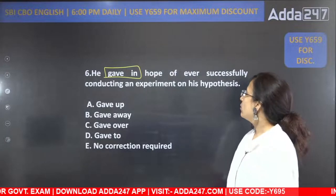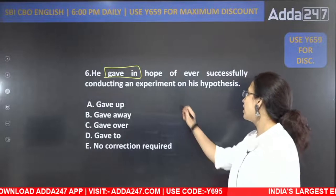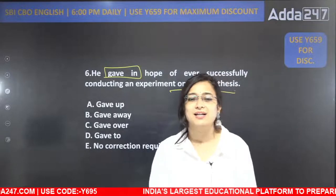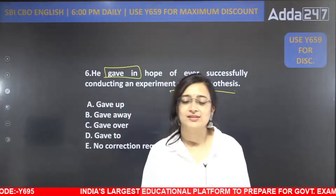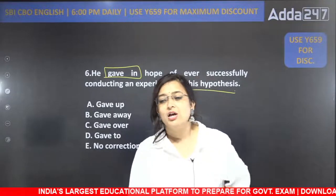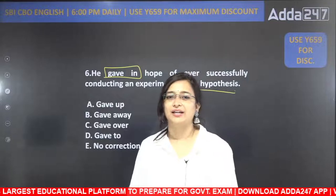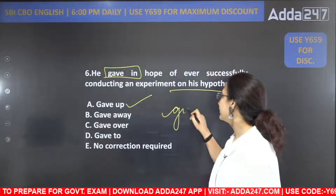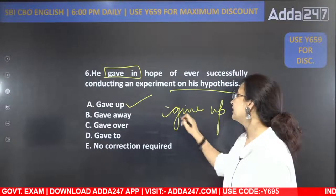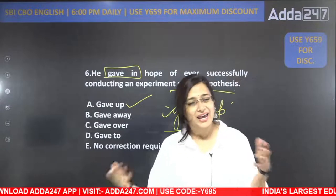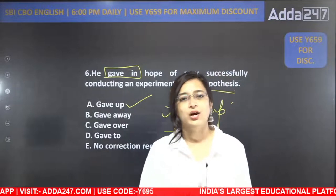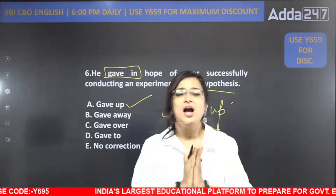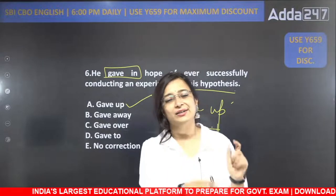He gave in hope of ever successfully conducting an experiment on his hypothesis. Unhone ab samajh liya hai ki vo kabhi bhi successful research nahi kar paayenge apne paper pe. So 'gave in' ko hum replace karenge 'gave up' se. Gave up ya give up — its meaning is to accept that you are going to be a failure at this and you are not proceeding with this idea. Hum is idea ke saath aage life mein nahi jaana chahte. That is called giving up — which is the worst thing that you can do.